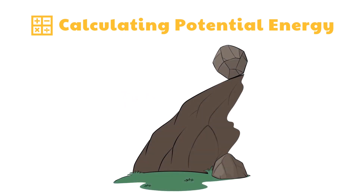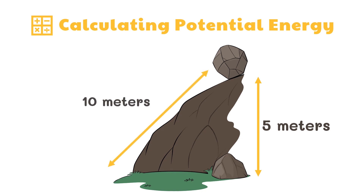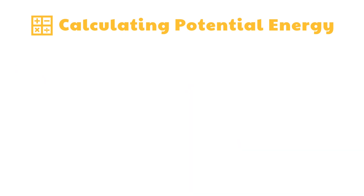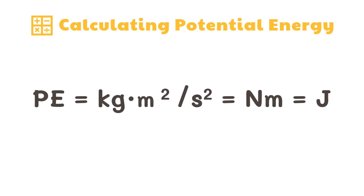Here's an example. To compute for the rock's potential energy, we would get the vertical height of the hill, which is 5 meters, and not the diagonal measure of 10 meters. Potential energy depends only on the initial and final position — the difference in height — and is independent of path. If we disregard any frictional loss, it takes the same amount of work to lift the object's mass, no matter the path. The unit for potential energy is kilogram meter squared per second squared, which is equivalent to a newton meter or a joule.